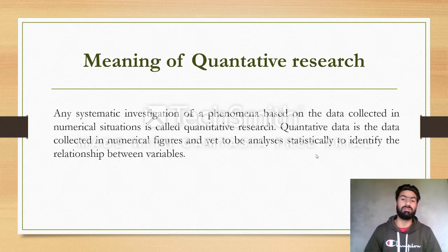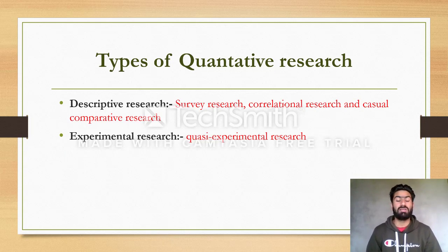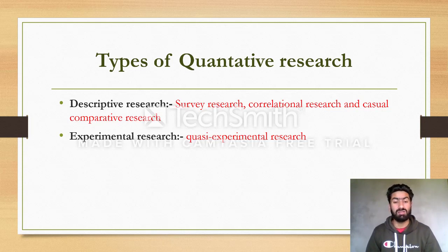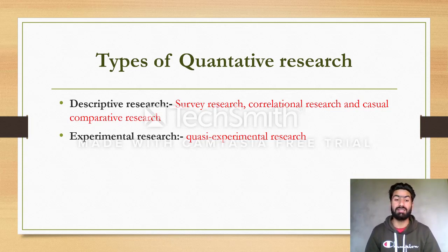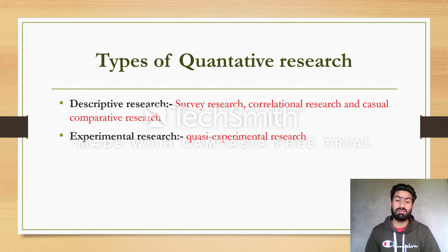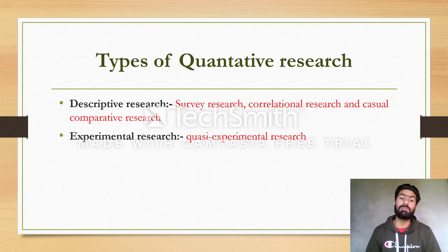Now let's look at the types of quantitative research. There are many types, but I have mentioned two main types here. I have included some other types — such as survey research, correlation research, and causal-comparative research — under descriptive research, because all three are subtypes of descriptive research.